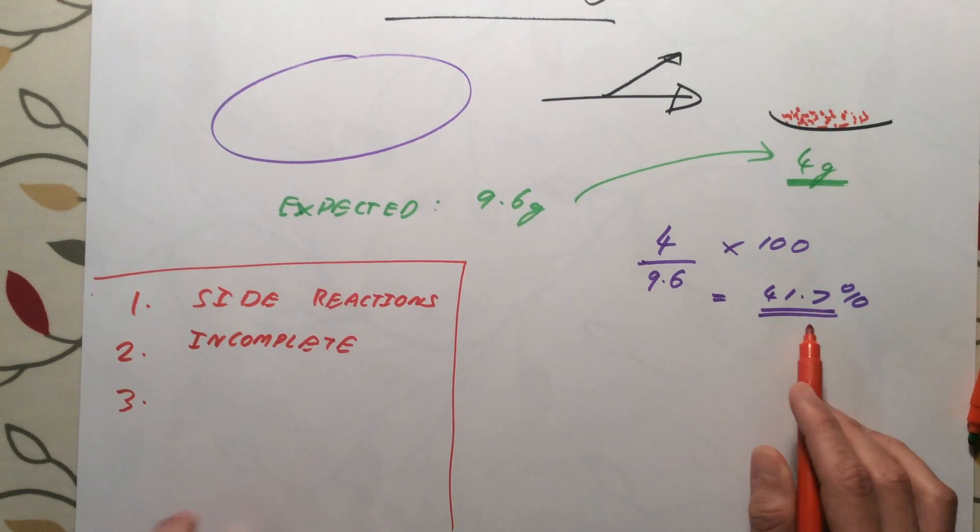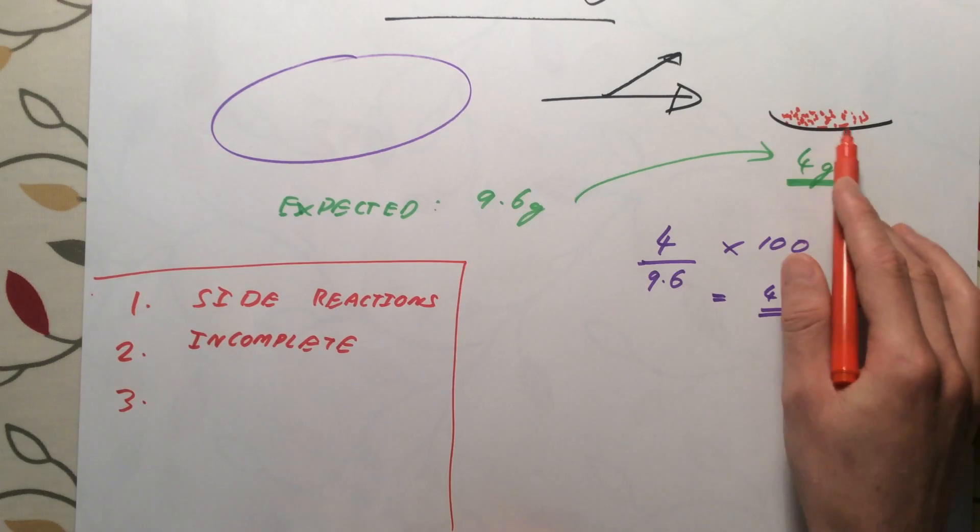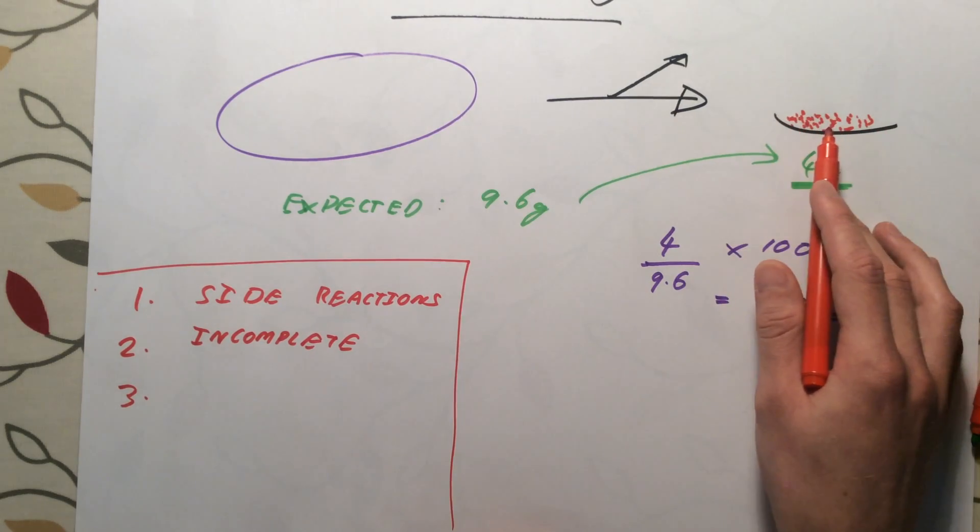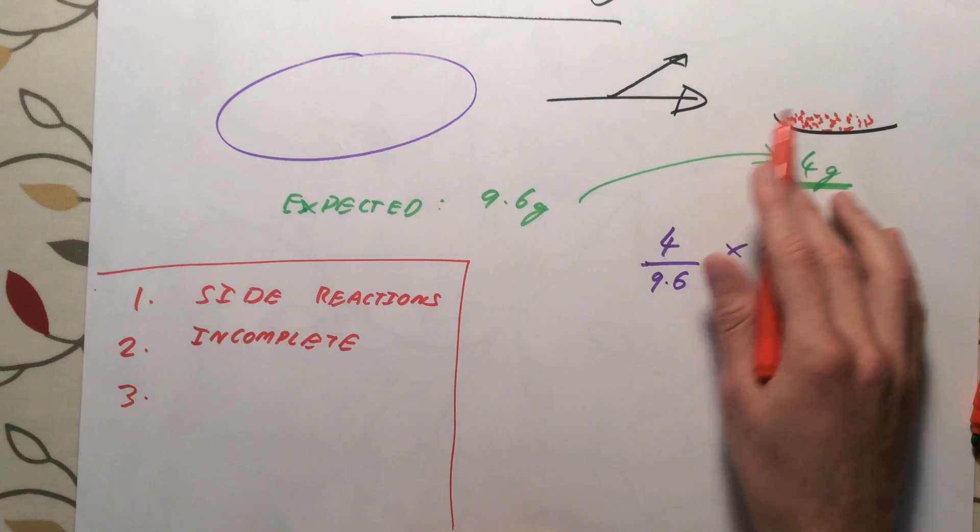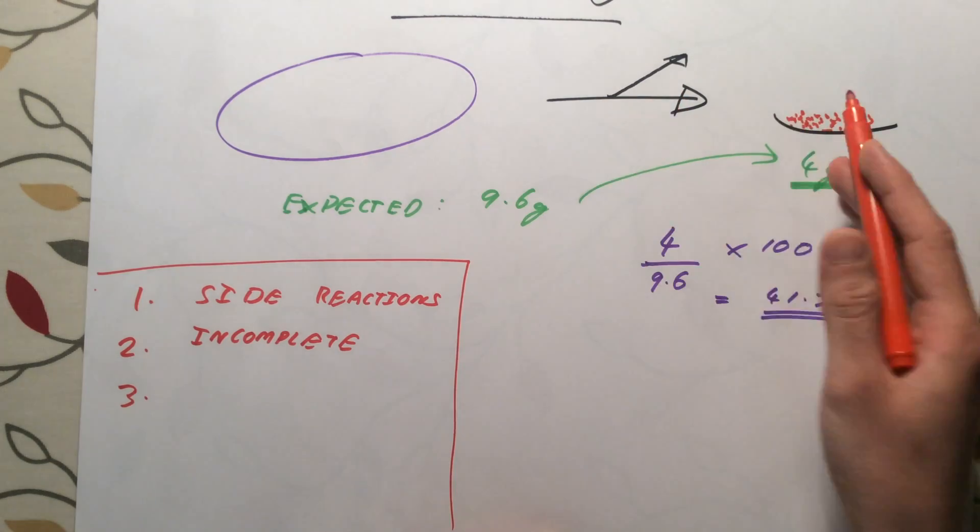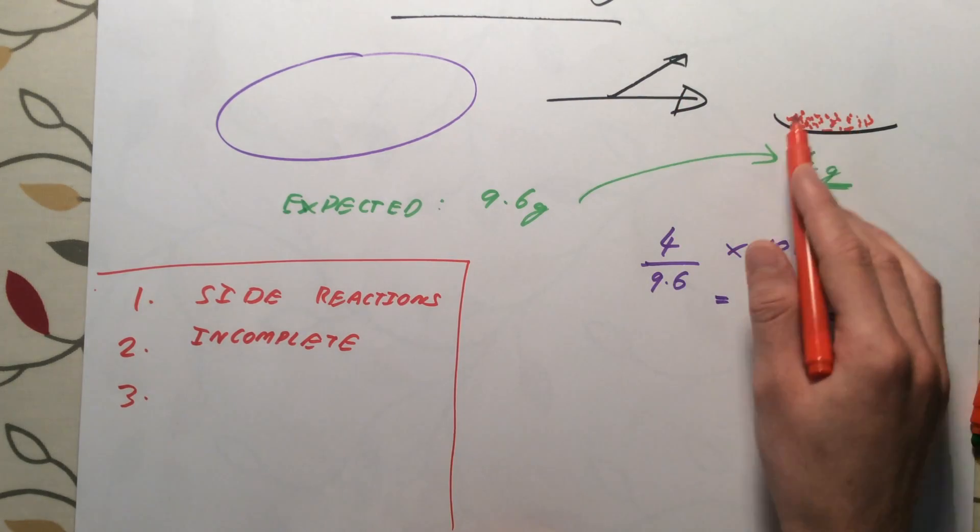The third reason we're not going to get 100% yield is in order to get this product as the pure chemical. We're going to have to take the mixture that we're making in this reaction, we're going to have to filter the product, we have to wash it, possibly dry it. We've got lots of steps in order to purify it, so we might lose some product during purification.